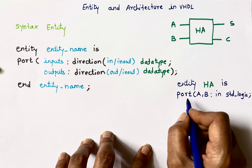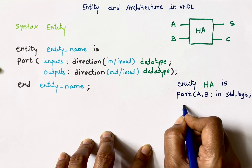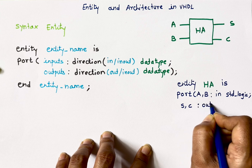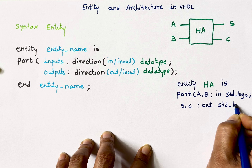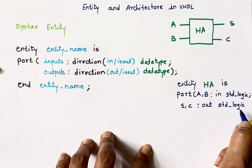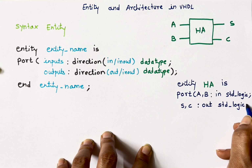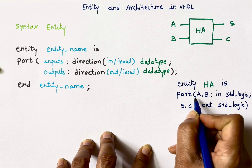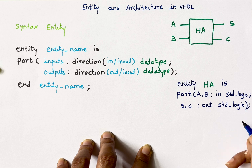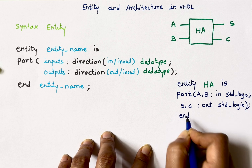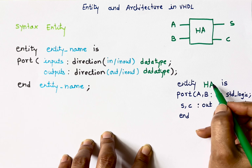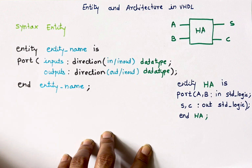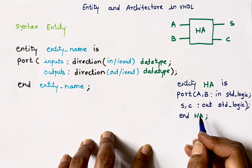Next I have two outputs, so I'll write 's, c : out std_logic'. Now we are done with all inputs and outputs. I'll close this bracket, then put a semicolon, and write the entity's name: 'end ha;'. In this way we write entity — it tells us how many inputs and outputs there are and their data types.